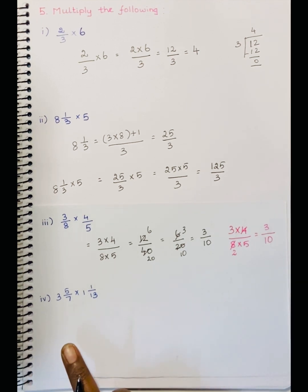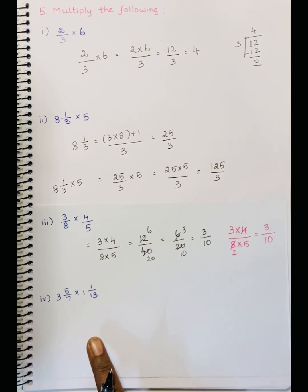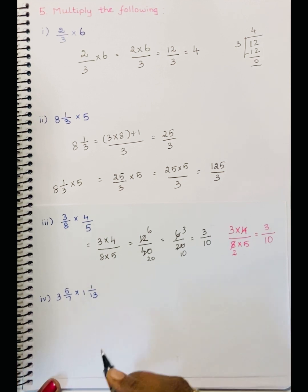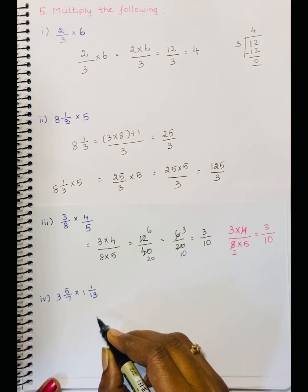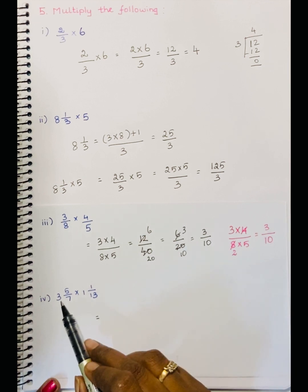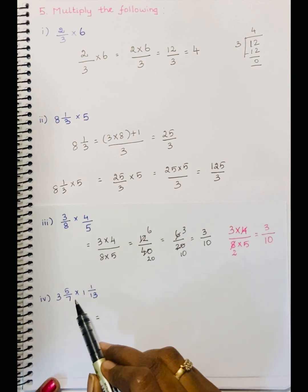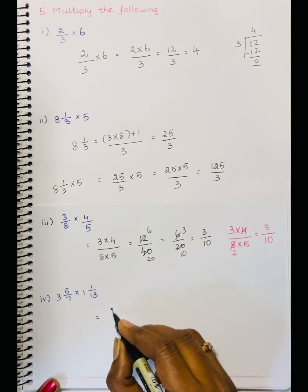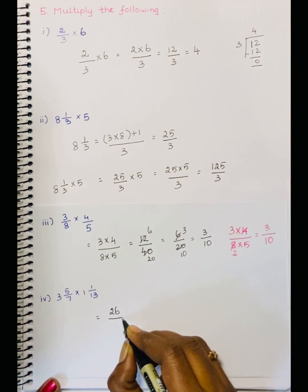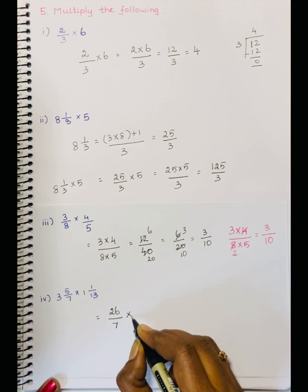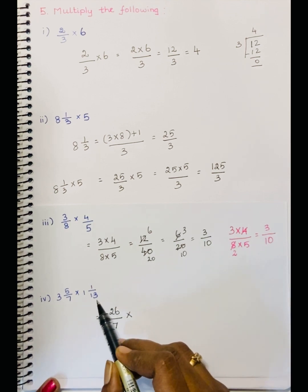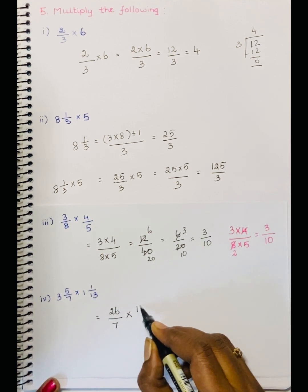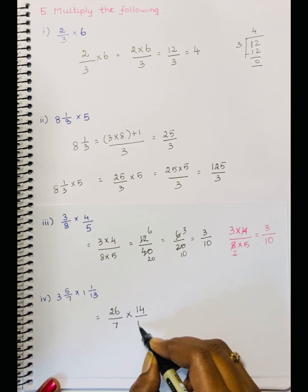Next, fourth sum: 3 and 5 by 7 into 1 and 1 by 13. These are mixed fractions, so we have to convert to improper fractions. First one: 7 threes are 21, 21 plus 5 is 26, so 26 divided by 7. Second: 13 ones are 13, 13 plus 1 is 14, so 14 divided by 13.